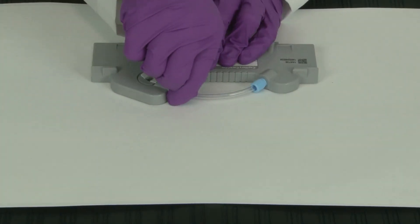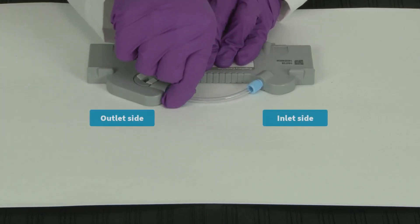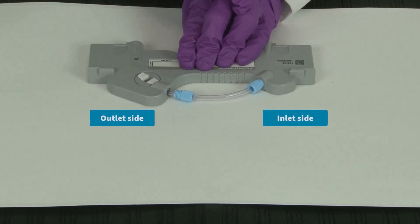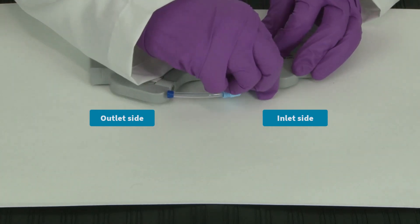First, you'll begin unscrewing the light blue nut closest to the outlet side of the cartridge. Then pull out the tubing. Repeat this step on the other light blue nut closest to the inlet side.